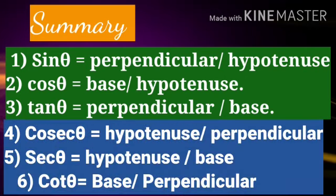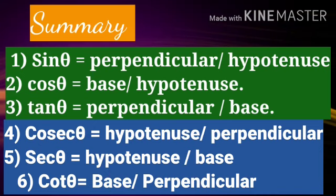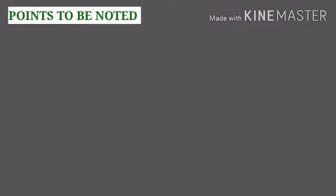To summarize the reciprocal ratios: cosec theta, which is the reciprocal of sine theta, can be written as hypotenuse by perpendicular, or H by P. Sec theta equals hypotenuse by base, written H by B, which is the inverse of cos theta. Cot theta can be written as base by perpendicular, B by P, which is the inverse of tan theta. Let us now have a quick look at some important points about trigonometric ratios.